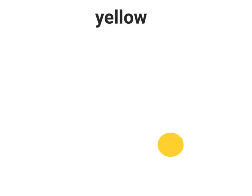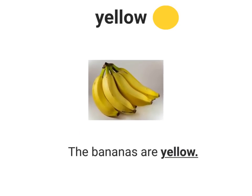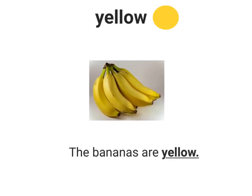The next word is yellow. Yellow is a color. It looks like this. A sentence with the word yellow in it is: The bananas are yellow.